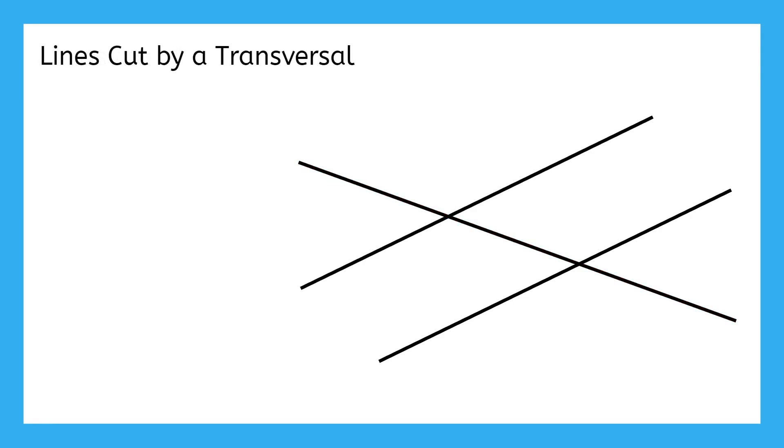When two lines are intersected or cut by a transversal, there are eight different angles that are created by the intersections. Try to find all eight angles in this diagram. Now, count them up. Did you find all eight? Each of these labels is at the vertex of its angle. Let me show you an example. Number one is representing this angle right here. Number two is representing this angle right here. And so on.